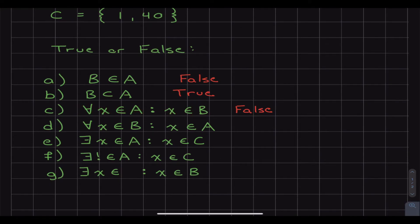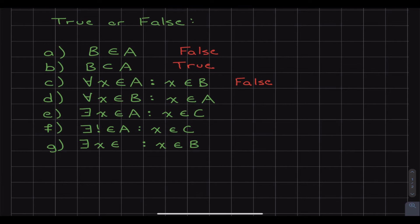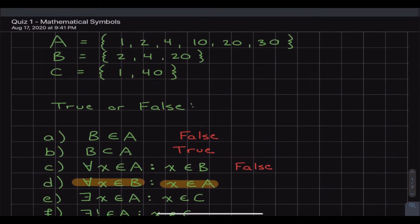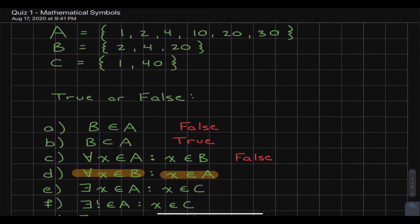And now we're going to move on to the opposite because what part d asks, for every number in B, that number is also found in A. And I should be saying element, not number, but I'm just trying to make this a little simpler. For every number in B, that number is in A. And if we look, that's actually very similar to question b.